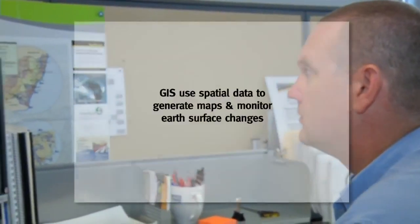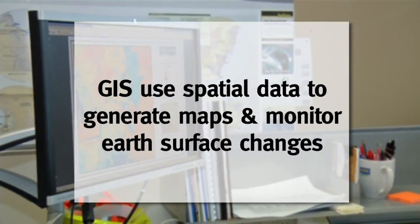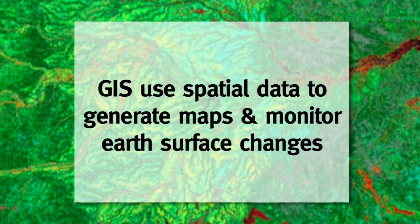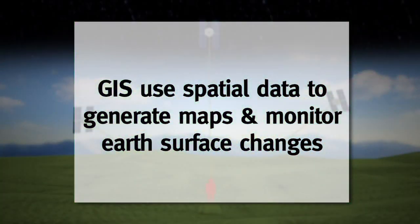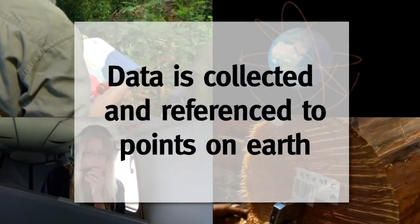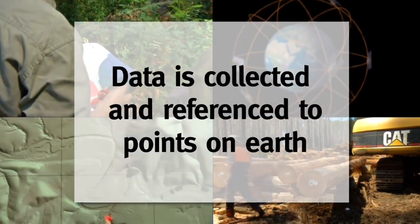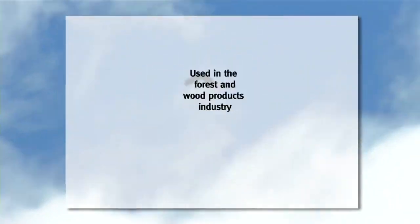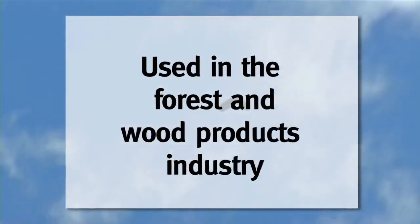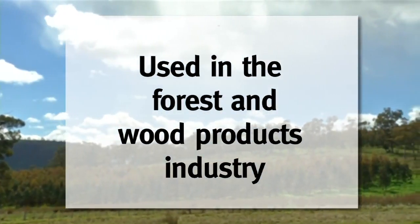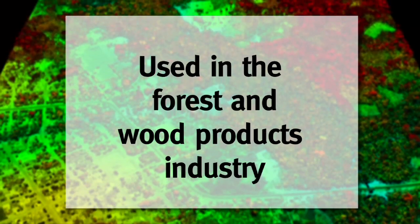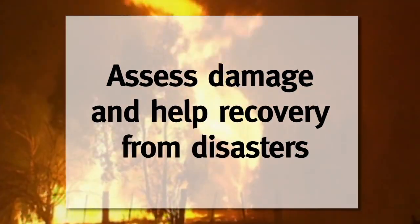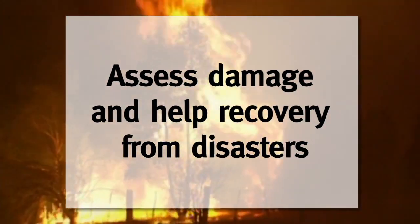Now let's sum up what we've covered. Geographical information systems are computer-based tools that use spatial data to generate maps and monitor changes at the Earth's surface. Data for GIS is collected in the field from satellites, laser scanners and photographs and referenced to points on Earth. GPS and remote sensing equipment are regularly used in forestry to monitor tree growth, forest health and carbon storage. Benefits of GIS include assessing damage from natural or man-made disasters and helping in recovery and regeneration.